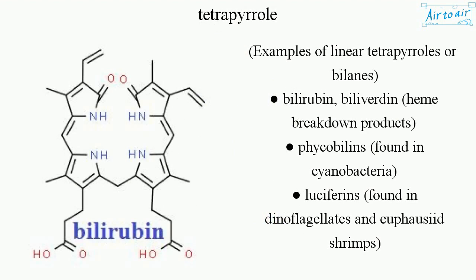Examples of linear tetraphols are bilanes, bilirubin, oliverdin, heme breakdown products, phycobilans found in cyanobacteria, and luciferins found in dinoflagellates and euphaseid shrimps.